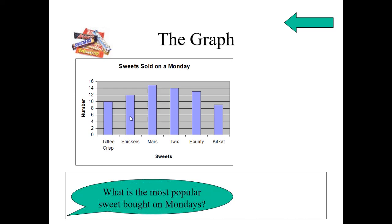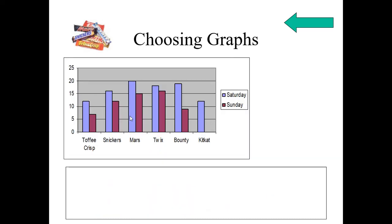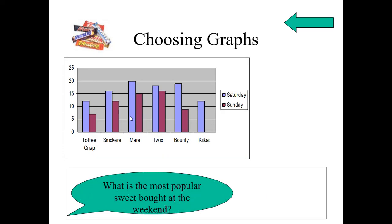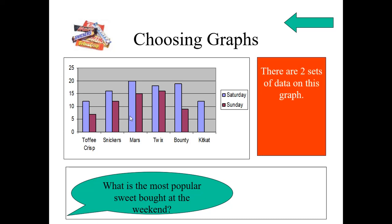Now, we can answer question based on this graph. What is the most popular sweet bought on Mondays? That is Mars. We can easily say the answer. Easy to answer this question from a graph. There is only one set of data on this graph. Now, look at this graph. It has two values. What is the most popular sweet bought at the weekend? Easily we can tell by comparing two weekends, Saturday and Sunday. Otherwise, we can change the graph also. There are two sets of data on this graph. It is easy to answer this question.